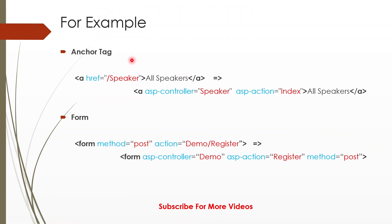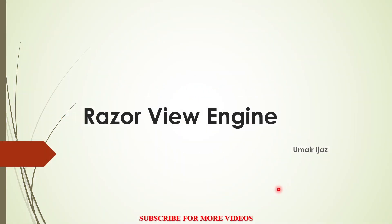In HTML we have an anchor tag with an href attribute targeting a Speaker controller. But in ASP.NET Core you use asp-controller and asp-action attributes, passing the controller and action values within those. For form tags, you would normally use method=post and an action attribute pointing to a demo/register page, but in ASP.NET Core we use asp-controller, asp-action, and then method. There are many examples of tag helpers. We will use them step by step. Lastly, let's learn about the Razor view engine.